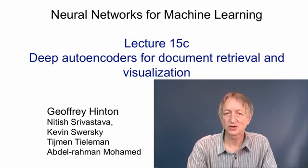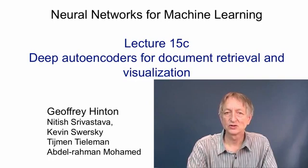Using a big database of documents, we showed that 10 components extracted with a deep autoencoder are actually worth more than 50 components extracted with a linear method like latent semantic analysis. We also showed that if you make the code very small, having just two components, you can use those two components for visualising documents as a point in a two-dimensional map, and this works much better than just extracting the first two principal components.